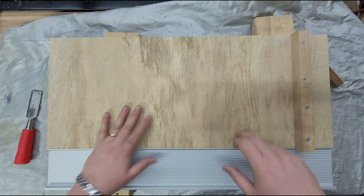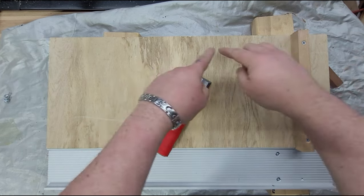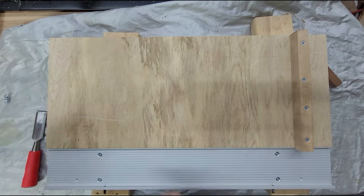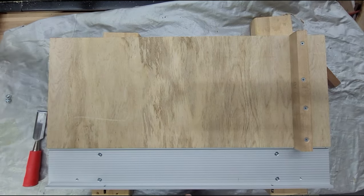All right, so final steps here. I'm going to go ahead and chisel the glue off from the sides just to make it prettier. We're going to attach the bar and put some of the anti-friction tape on there.